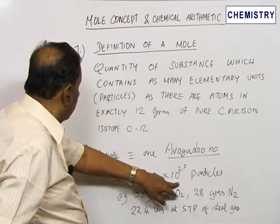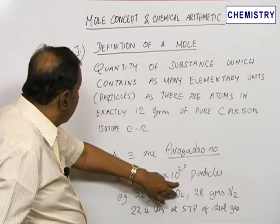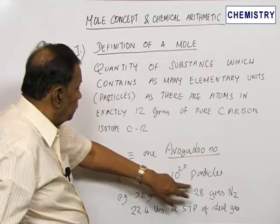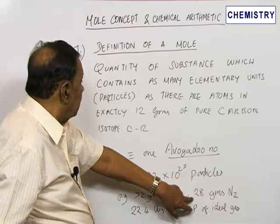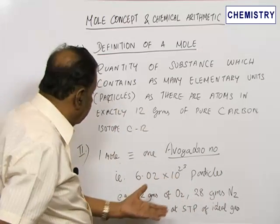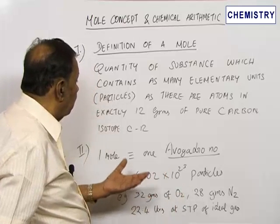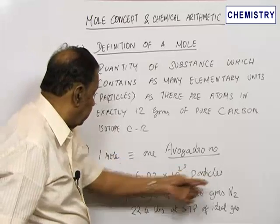Similarly, we know that atomic weight of nitrogen is 14 and N2. Therefore, 14 plus 14, 28 is the molecular weight of nitrogen. So you take 28 grams of nitrogen and that is one mole, and it contains so many particles or so many molecules.